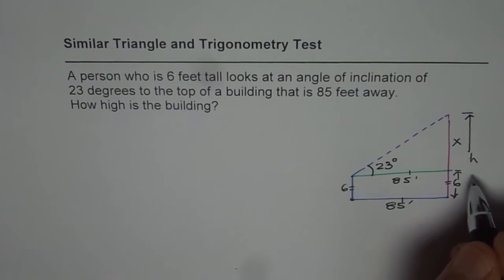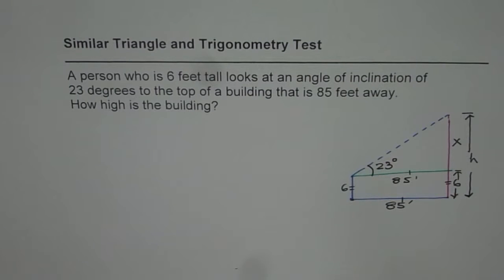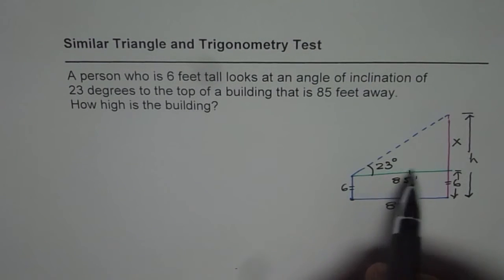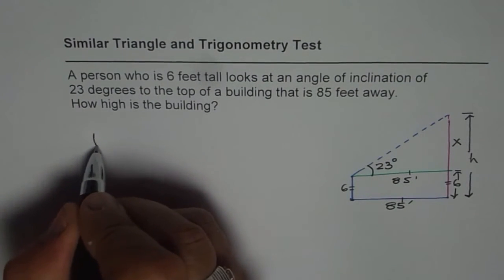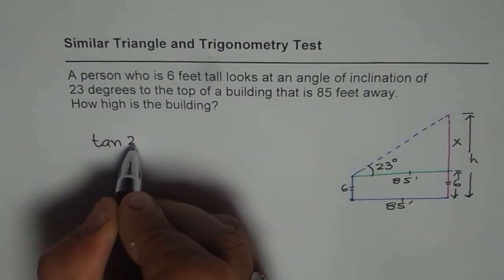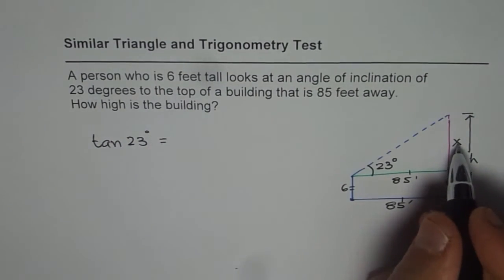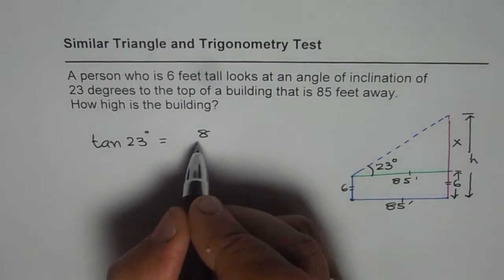So sometimes in hurry, you may forget to add 6. That may cause you a few marks. Now to find x, we will use of course tan. Tan of 23 degrees will give us x over 85, correct?